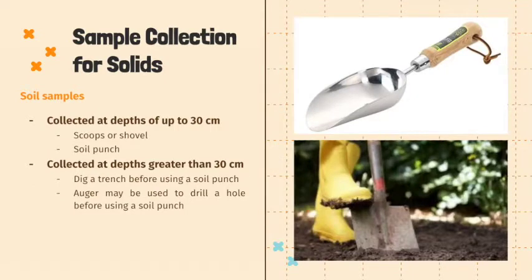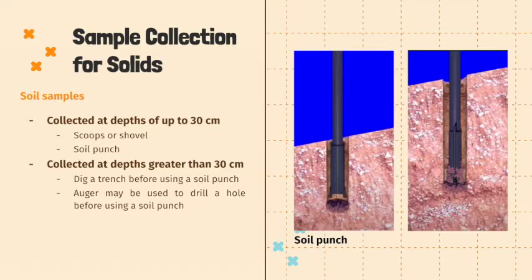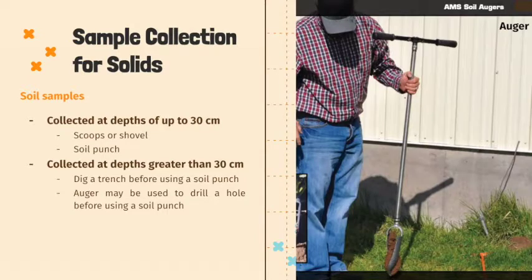For soil samples collected at depths of up to 30 cm, scoops or shovels are used. However, a better method is to use a soil punch, which is a thin-walled steel tube that is pushed into the soil and then removed. For soil samples at depths greater than 30 cm, a trench must first be dug before using a soil punch. Alternatively, an auger can be used to drill a hole to the desired depth before using a soil punch.